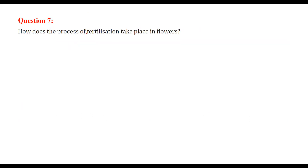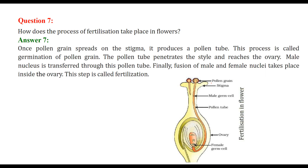How fertilization takes place in flowers: once the pollen grain lands on the stigma, it produces a pollen tube. This is called germination of the pollen grain. The pollen tube penetrates the style and reaches the ovary. The male nucleus is transferred through the pollen tube, and fusion of male and female nuclei takes place inside the ovary — this is called fertilization.